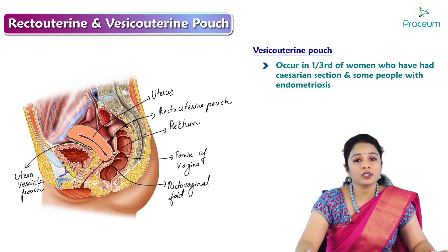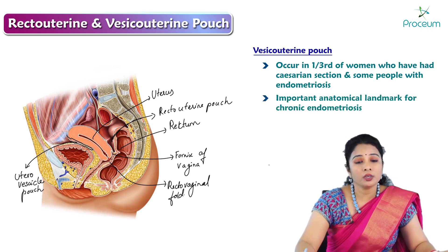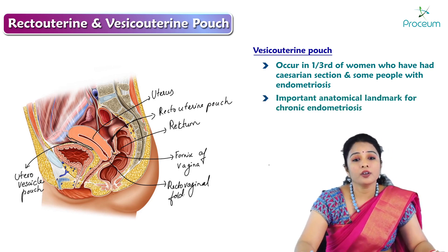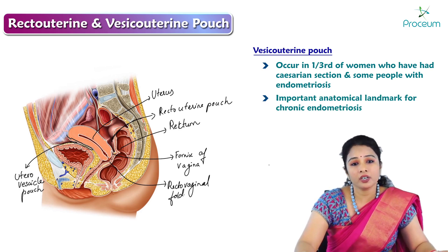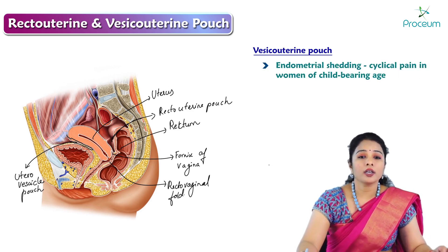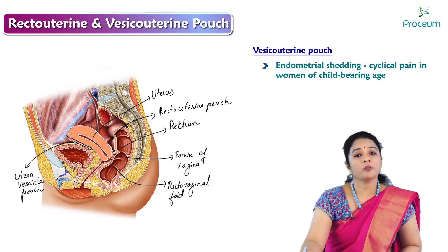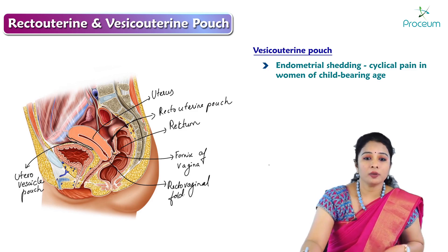This may occur in a third of women who have had a caesarean section and in some people with endometriosis. The vesico uterine pouch is an important anatomical landmark for chronic endometriosis, which means the formation of ectopic endometrial tissues. During chronic endometriosis, this pouch becomes an anatomical landmark and endometrial shedding in this region causes cyclical pain in women of childbearing age.